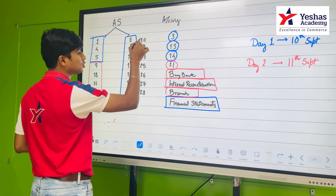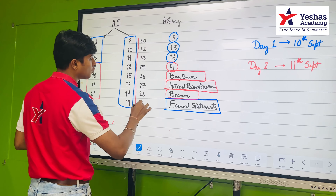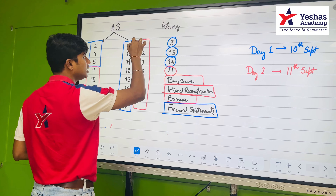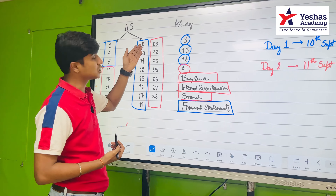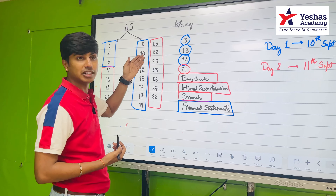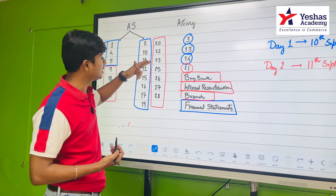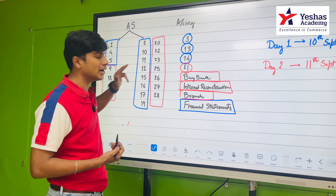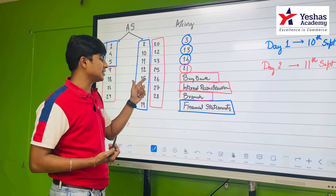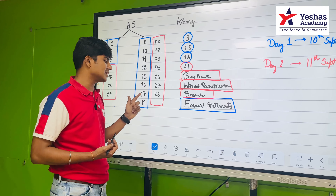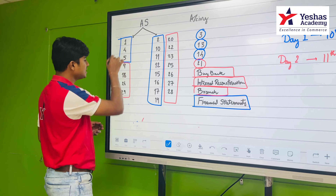Once we are done with these accounting topics, we can do AS 20, 22, 23, 25, 26, 27, and 28. That's AS 20 EPS, AS 22 Taxes on Income, AS 23 and AS 27 which are extensions of our consolidation — AS 23 is Associates, AS 27 is Joint Ventures — AS 25 Interim Financial Reporting, AS 26 Intangible Assets, and AS 28 Impairment of Assets.